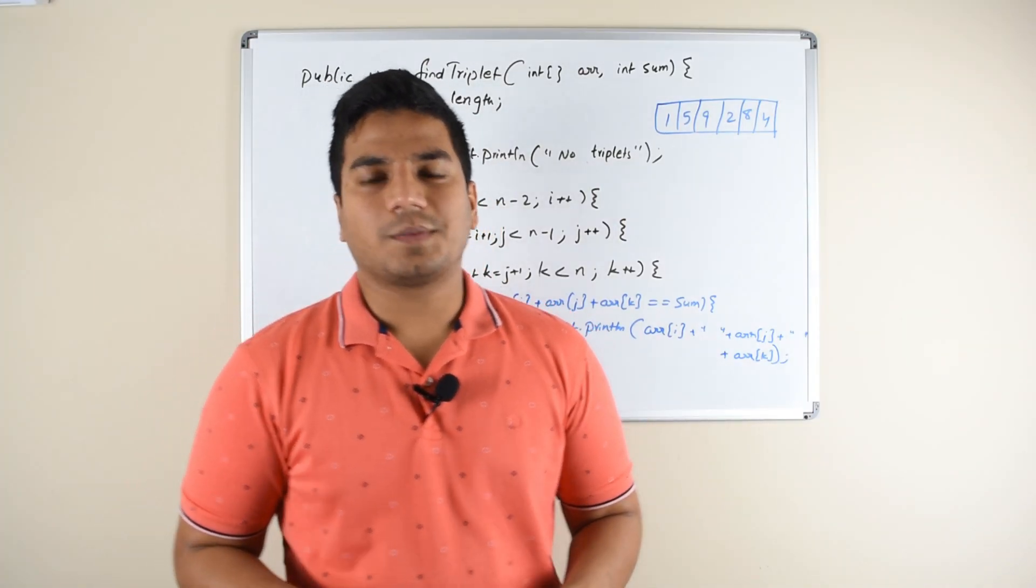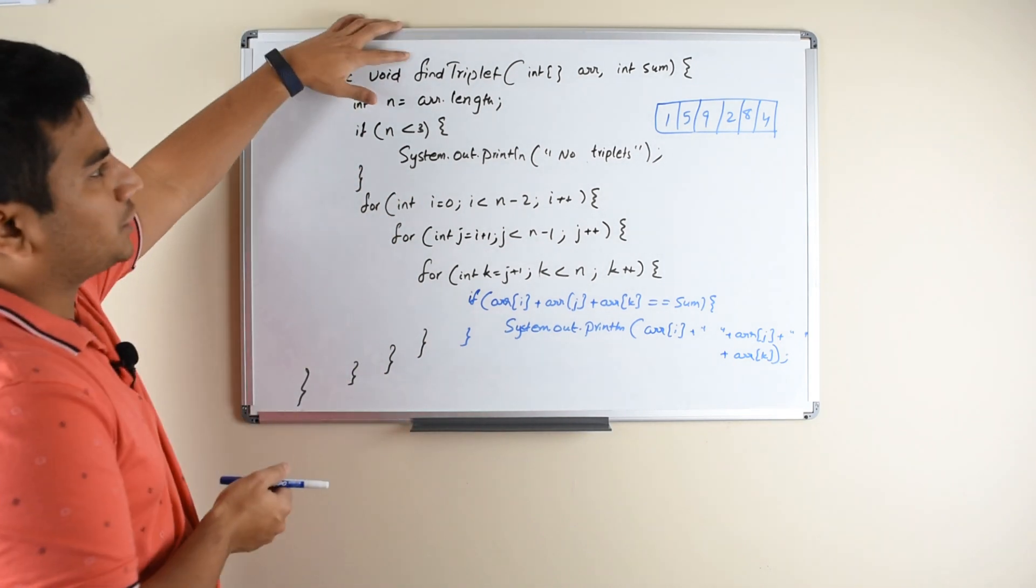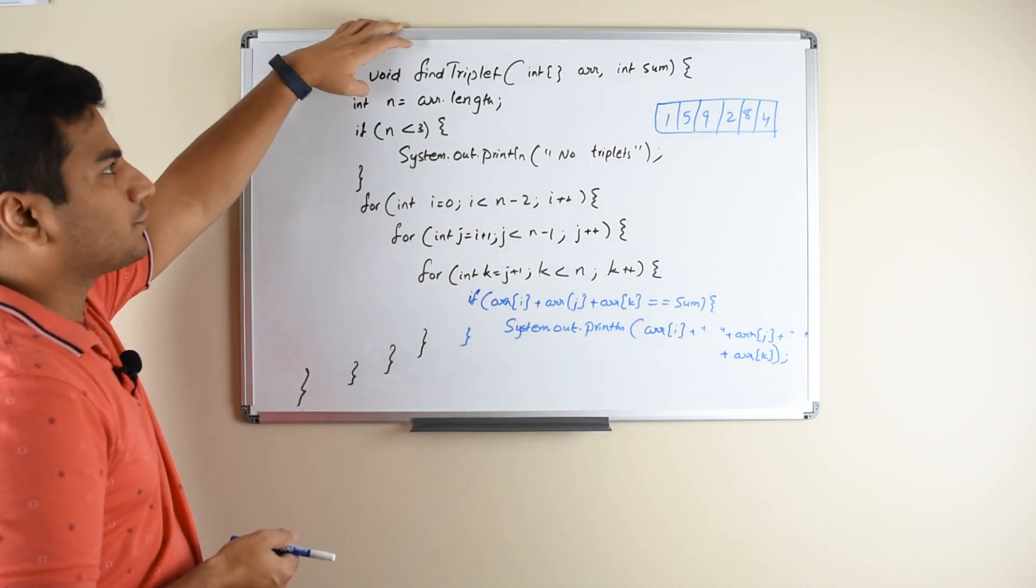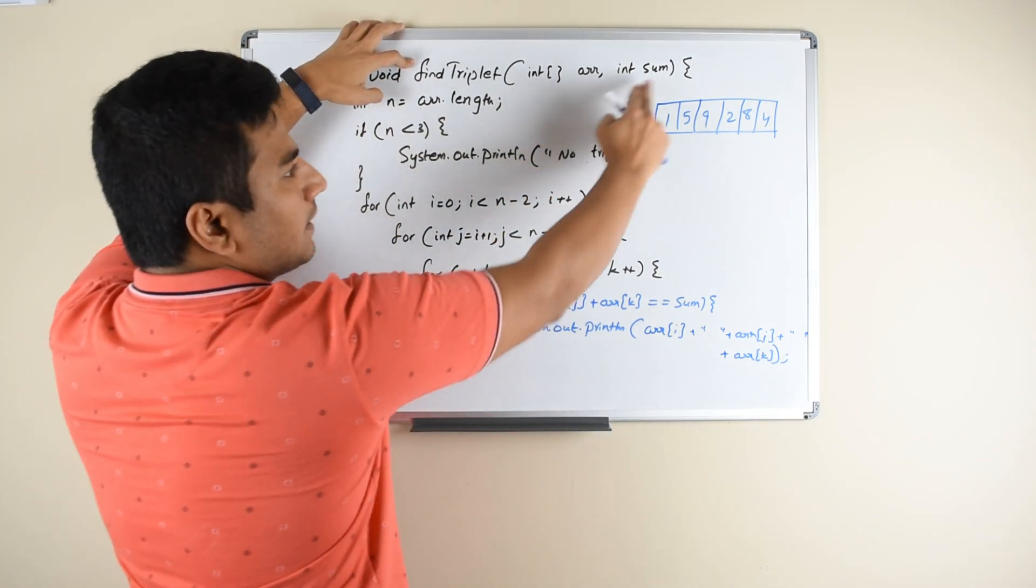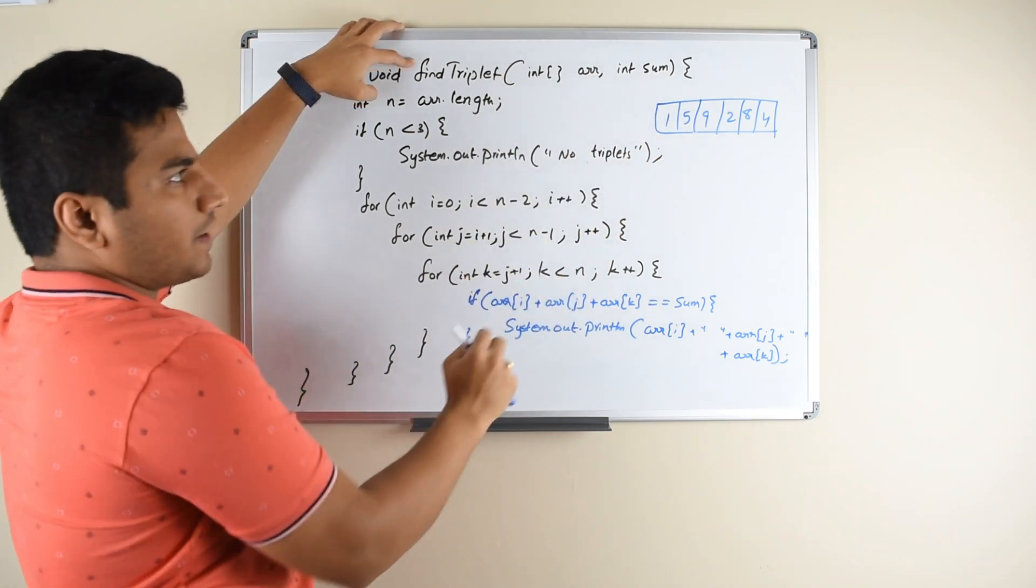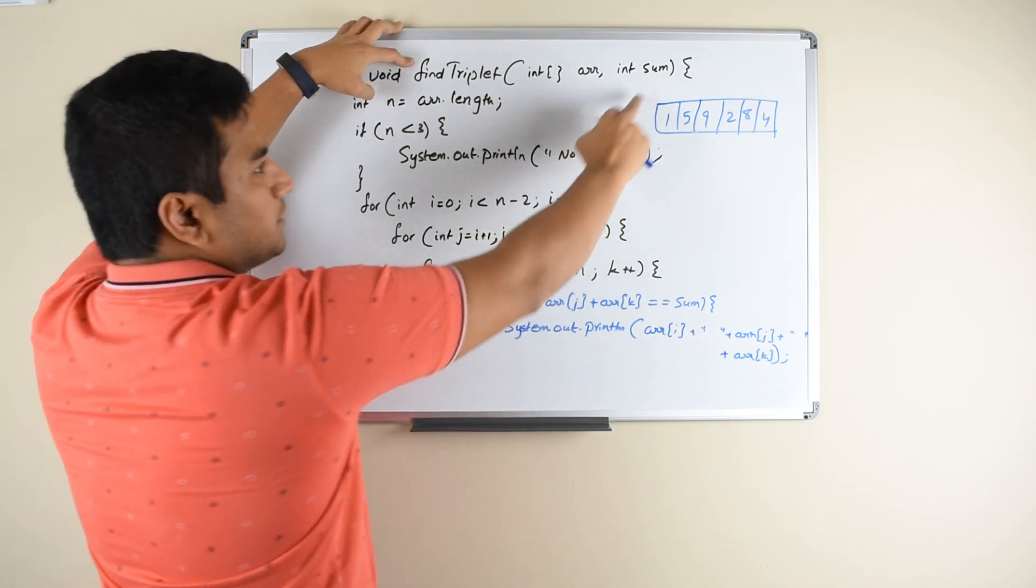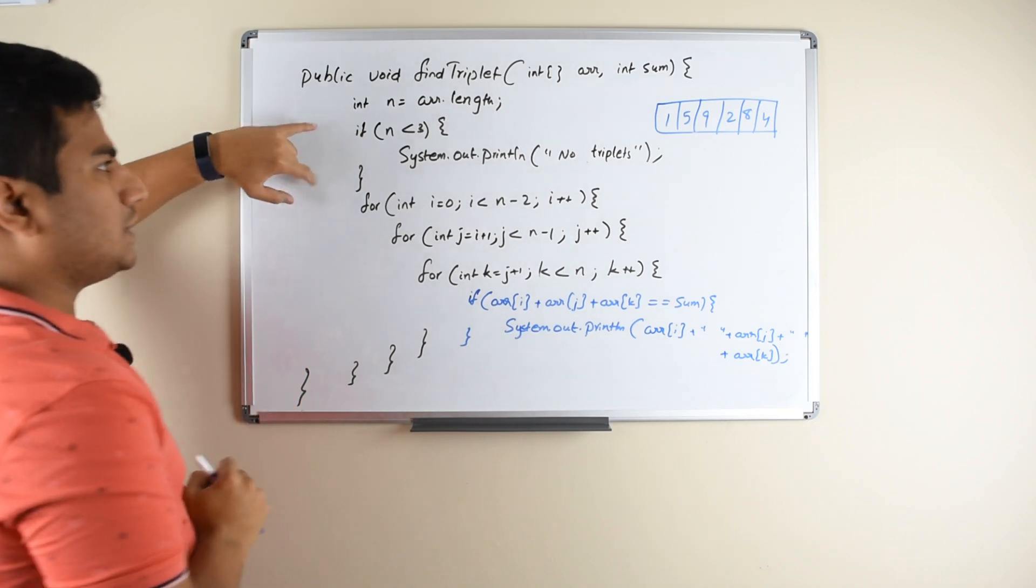Here is the code for the brute force technique which we just talked about. You have a function findTriplet, and the parameters for this function are the array and the sum. You are trying to find a triplet in this array which adds up to this sum.